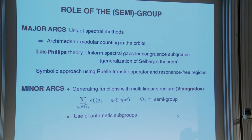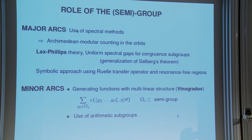Let me tell you why in the context of orbits of groups or semi-groups we have a chance to carry such a thing out. For the major arcs, what we need to understand is the distribution of the set from a modular point of view — we need to know something about the distribution of elements mod q where q is not too large. It turns out this is possible because of spectral methods. This counting can be performed by either the Lax-Phillips theory or other methods, which give you a precise counting in the orbits of these groups.